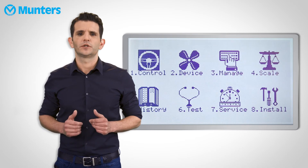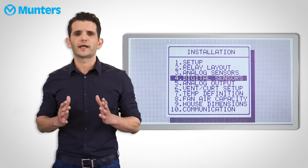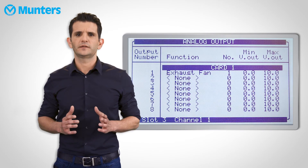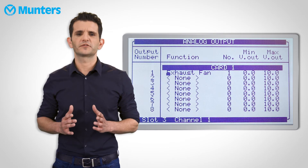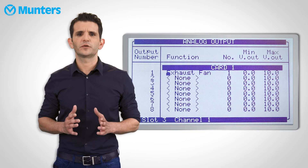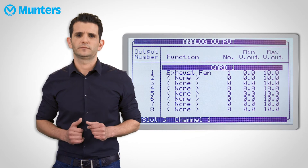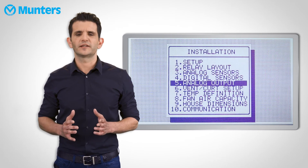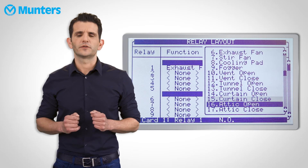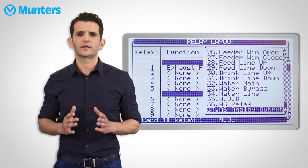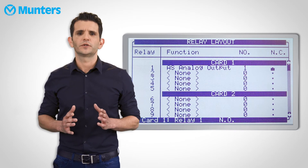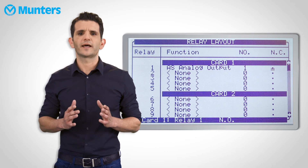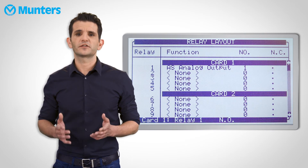So let's define a fan and assign an Analog Output Relay. First scroll to the Installation menu, and then select Analog Output. Then let's define a fan — for example, Exhaust Fan 1. As you can see on the left, this fan was defined on Analog Output 1. Now let's get out and select Relay Layout. Press Enter, and scroll all the way down to Same As Analog. After pressing Enter, you will see that the relay is now Same As Analog Output 1. Analog Output 1 is actually Exhaust Fan 1. Now, whenever the fan is operating more than 0%, the associated relay will turn on.